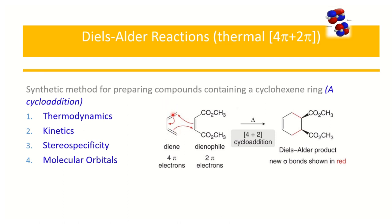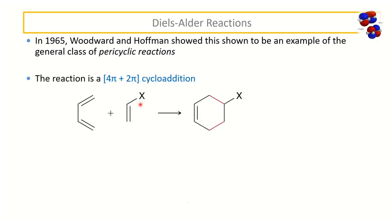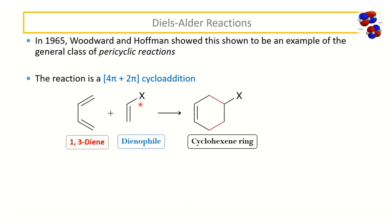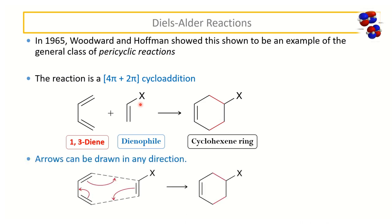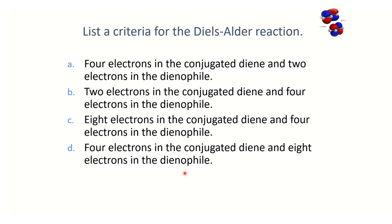Woodward and Hoffmann were the first to formalize this. The 4π + 2π gives cyclohexene. The mechanism shows a concerted movement of electrons: two new sigma bonds are formed while pi bonds are broken, generating new sigma bonds and a new pi bond — the product is a cyclohexene.